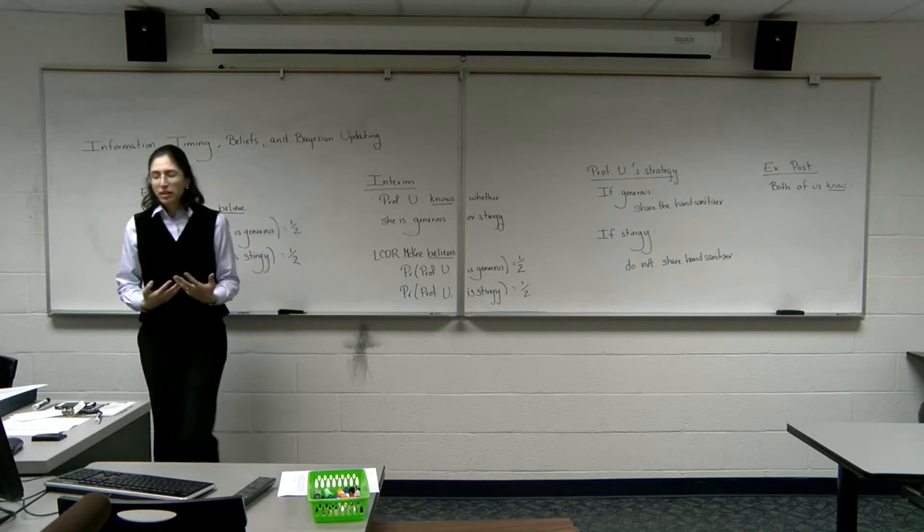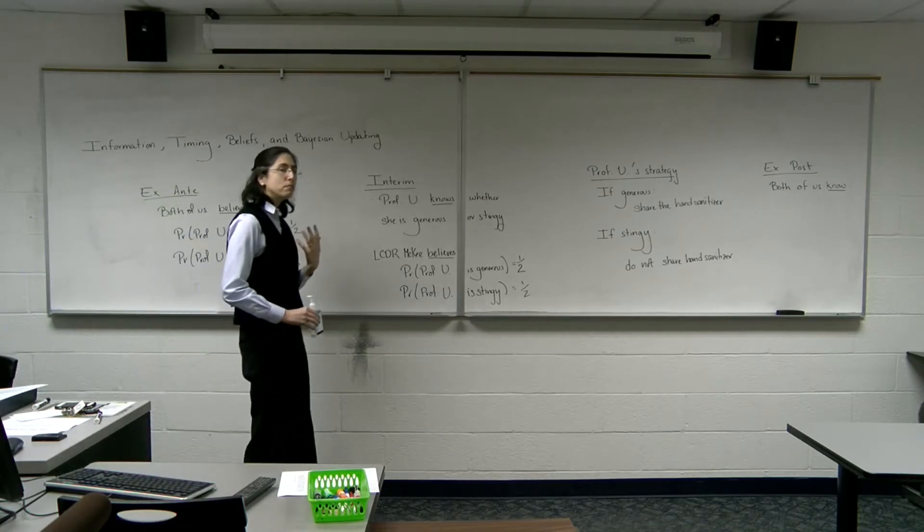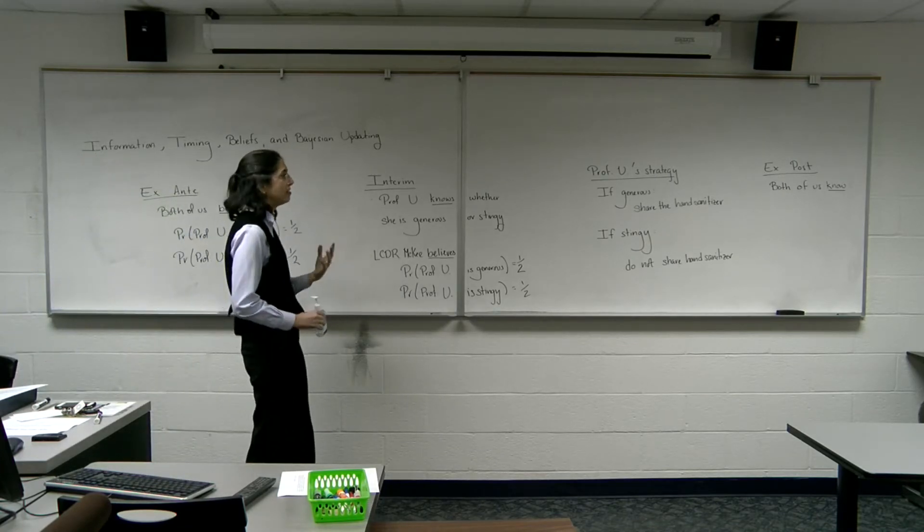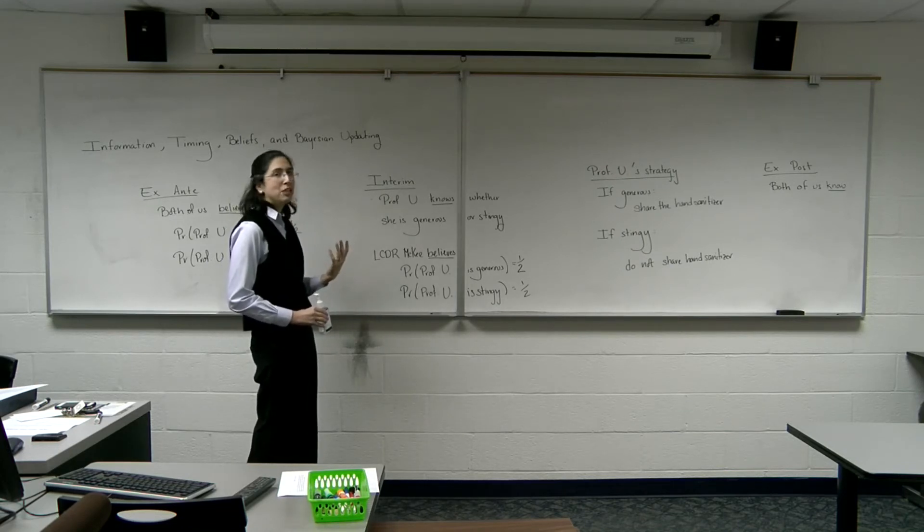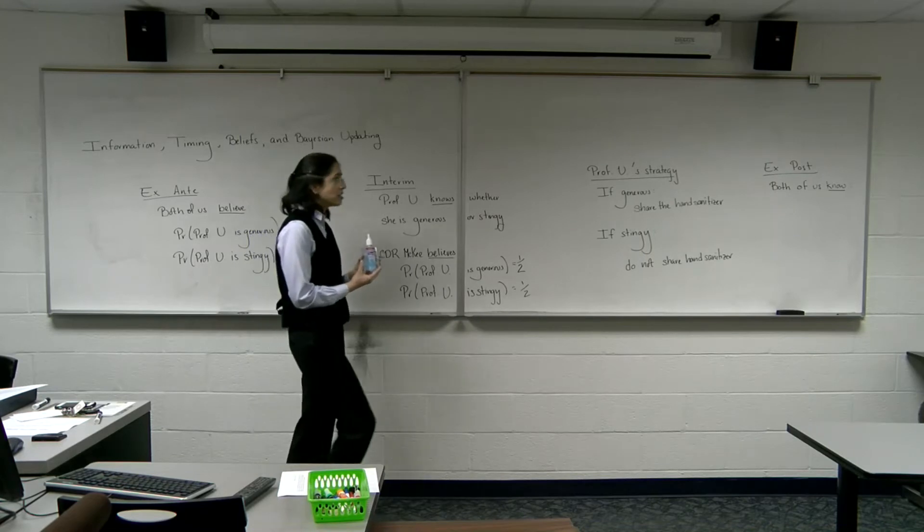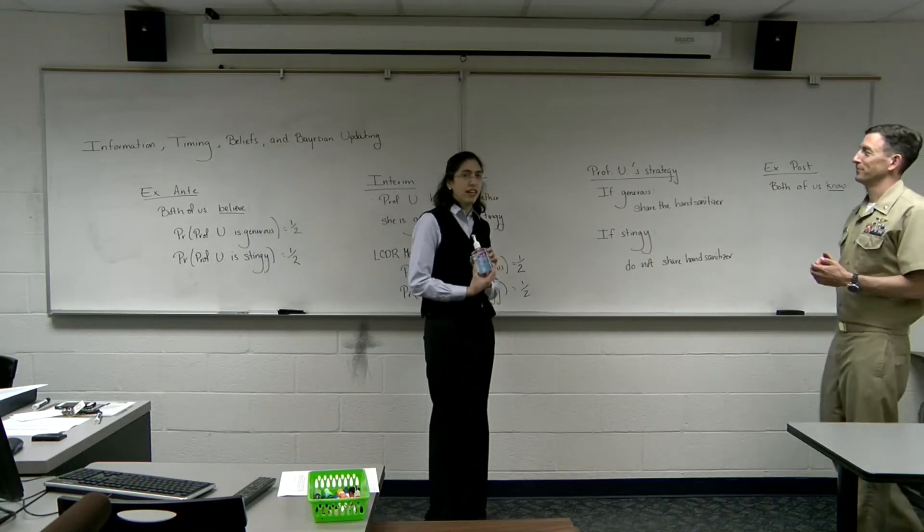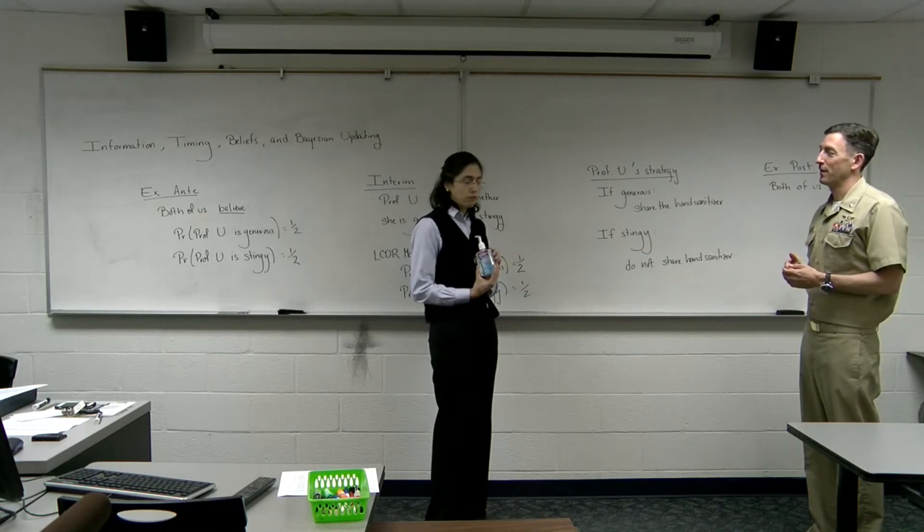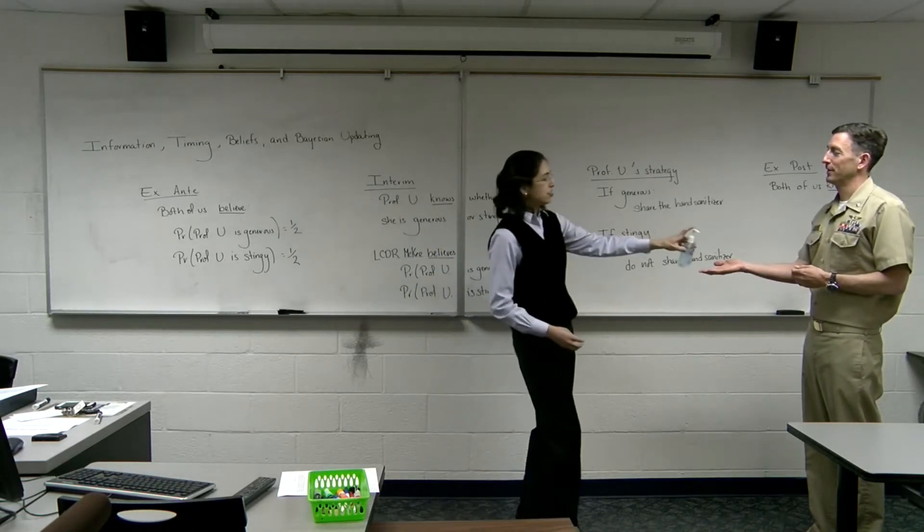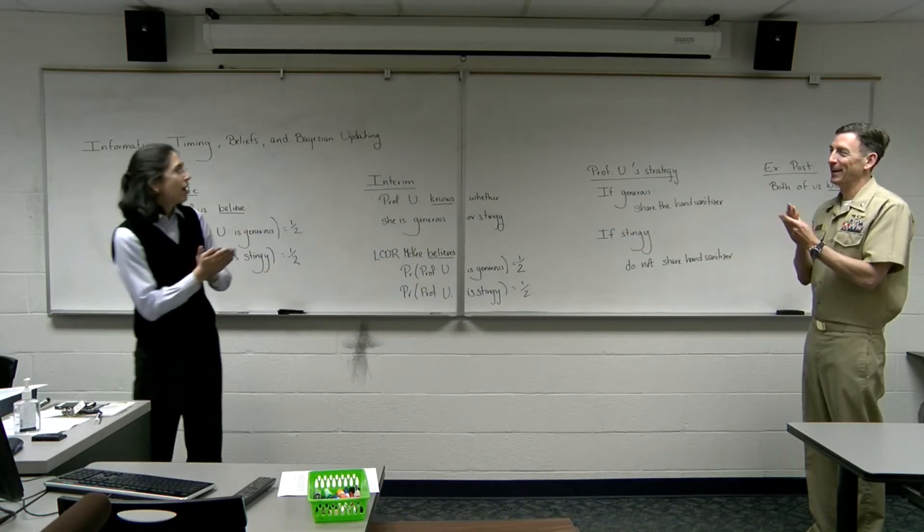So the way these games are going to work, this isn't quite a game because there's only one decision, is that a player observes his or her type, in this case generous or stingy, and then associates an action to each possible type. So my set of actions is going to either be to share the hand sanitizer or not share the hand sanitizer, based on the type that I've already observed. So I've observed my type, and I'm going to share this. Yeah, I wouldn't want to pass it. That would be a grave sin.